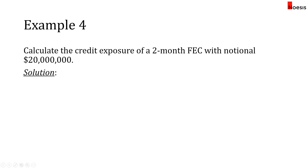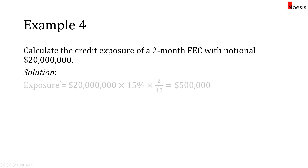Example four: calculate the credit exposure of a two-month FEC with a notional of twenty million dollars. For the first year of an FEC, take fifteen percent multiplied by the number of days to maturity over days per year — here, two over twelve — times fifteen percent times twenty million dollars, giving approximately five hundred thousand US dollars.